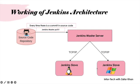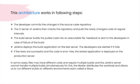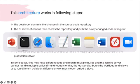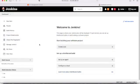In some cases files may have different code and require multiple builds that Jenkins cannot handle simultaneously. The master distributes the load to different machines. We are now going to set up that on AWS EC2 instances. This is the architecture of Jenkins — already discussed, but mentioned here for your information and from an interview perspective.